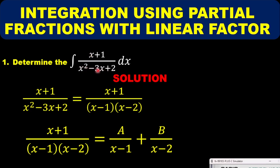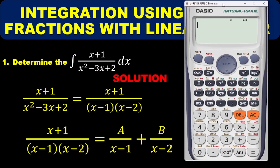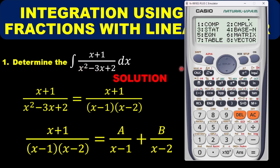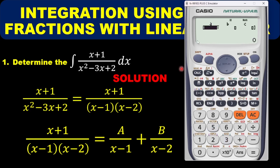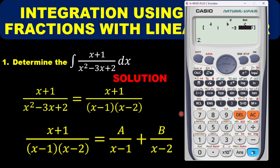This is a quadratic expression, so you can easily factorize it using a calculator. Press Mode, select Equation (option 5), then Quadratic (option 3). Enter the coefficients: a = 1, b = -3, c = 2. The calculator gives x₁ = 2 and x₂ = 1. Notice this is a quadratic equation.